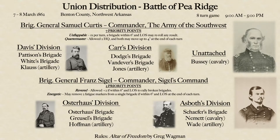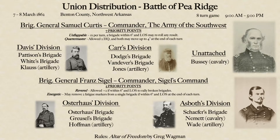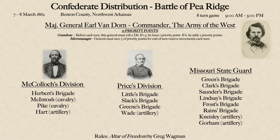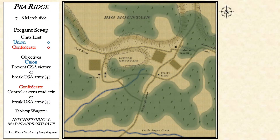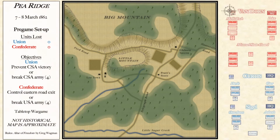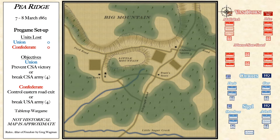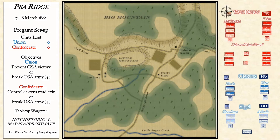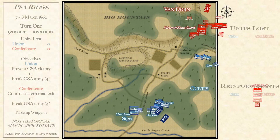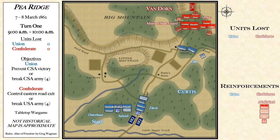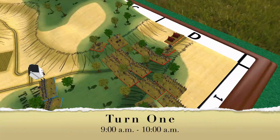Our Union side today will be led by Samuel Curtis and Franz Siegel. The political divide between the two seemed to hamper things a little bit on the battlefield, but not too much. Today we see them under two different commands. The Confederates are led by Earl Van Dorn, who commands the Army of the West, but also has a large contingent of untested volunteer Missouri State Guard soldiers. They are not very strong despite their larger numbers, giving the Union somewhat of an advantage on the field.